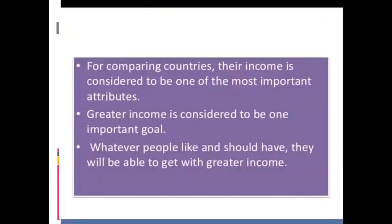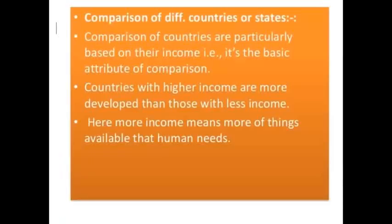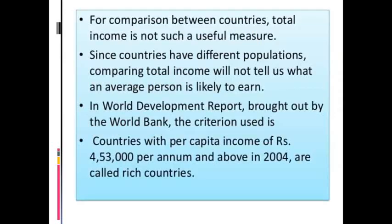Per capita income — that is per head income — is the main criteria used to compare countries. According to the World Development Report brought out by the World Bank, countries with per capita income of 4,53,000 rupees per annum and above in 2004 are called rich countries. The World Bank set this criteria of per capita income in 2004.